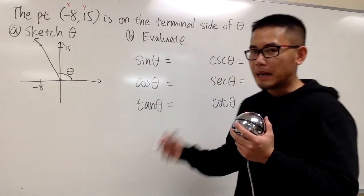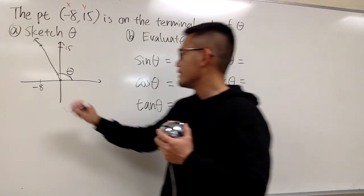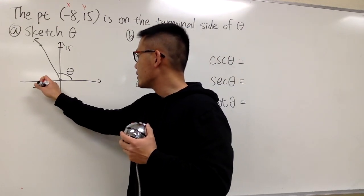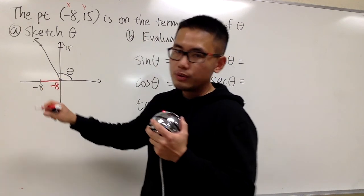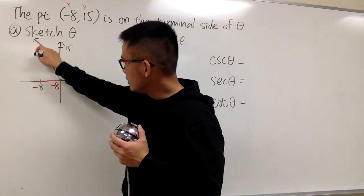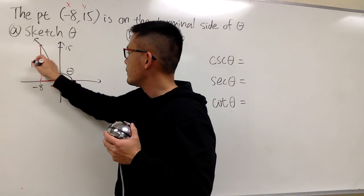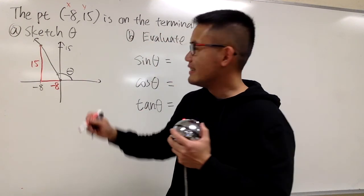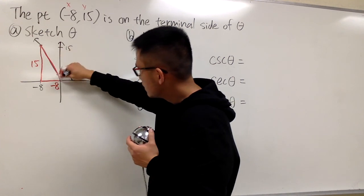And now, let's come up with a triangle so that we can fill this out. We know from here to here, it's the horizontal distance. That's the x value, which is negative 8. And we also draw this down right here, vertically, and that's the y value, which is positive 15. And we also need the r from this point to the origin.